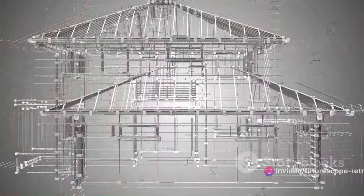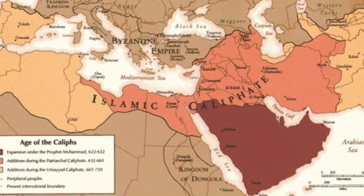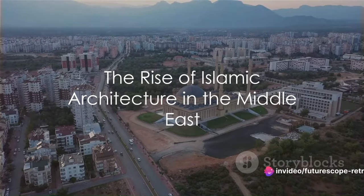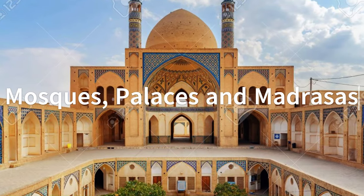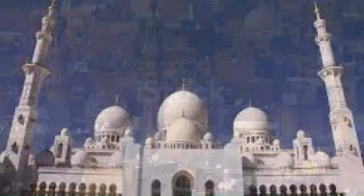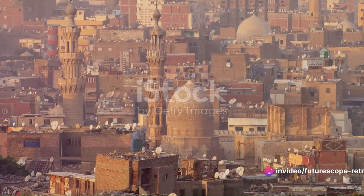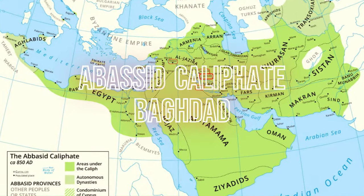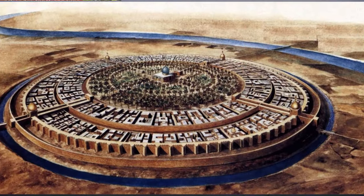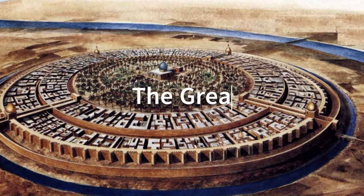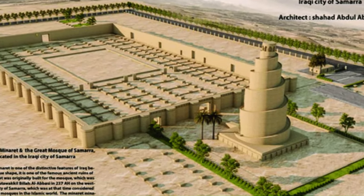The rise of Islam had a profound influence on the architectural styles of the Middle East, shaping the region's landscape with magnificent mosques, palaces, and madrasas. Across diverse geographical and cultural contexts, Islamic architecture showcased both unity and diversity in design. In Mesopotamia, the Abbasid Caliphate established the city of Baghdad as its capital in the 8th century, known for its circular plan and impressive architectural achievements. The Great Mosque of Samarra, with its spiral minaret, is a striking example of Mesopotamian architecture.